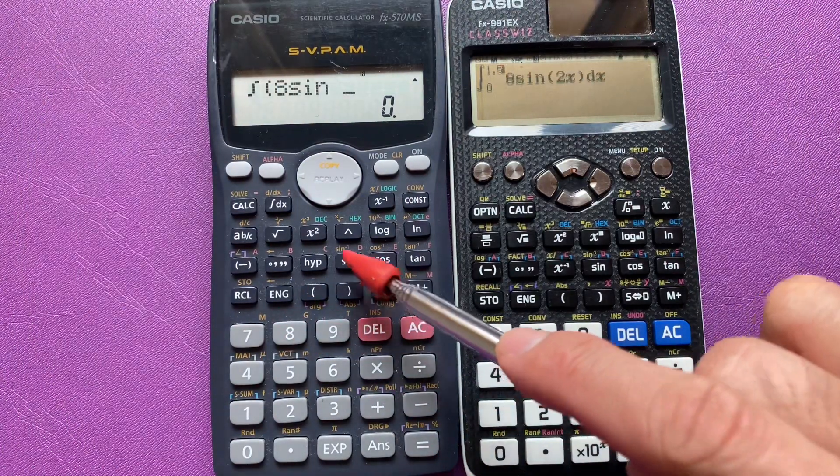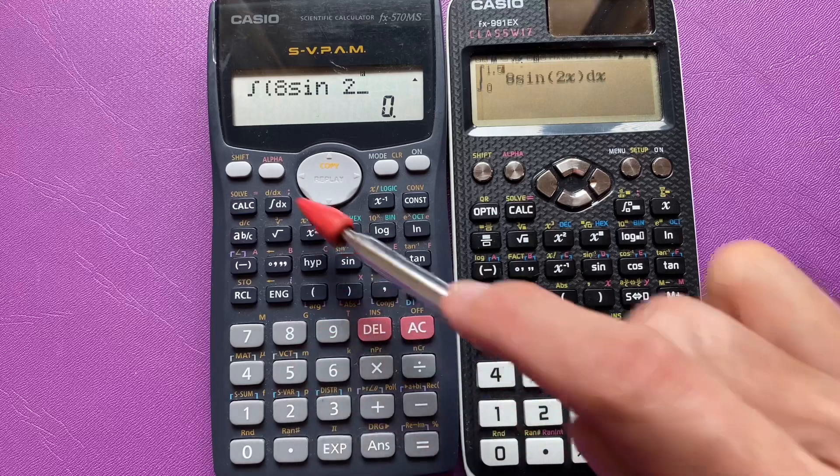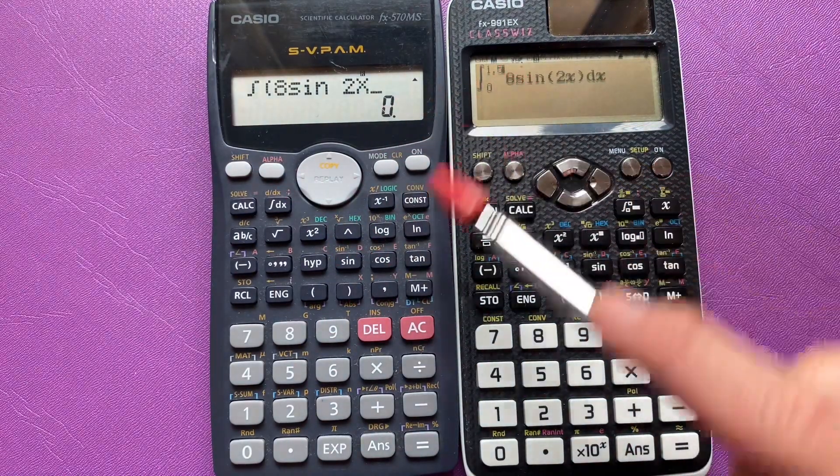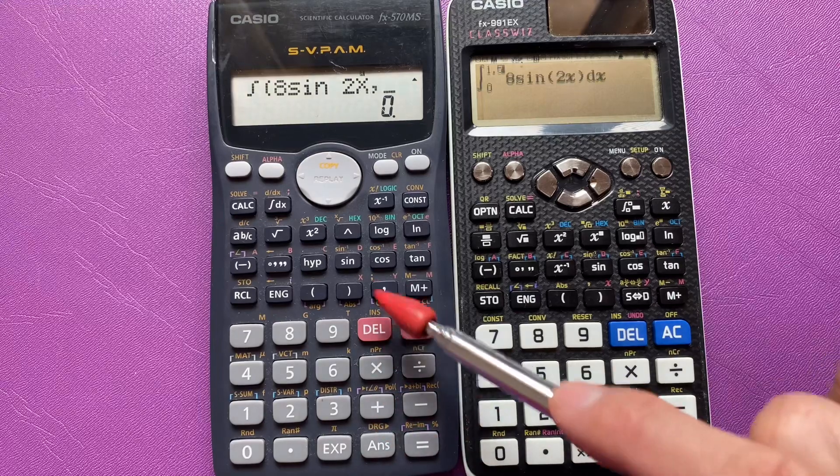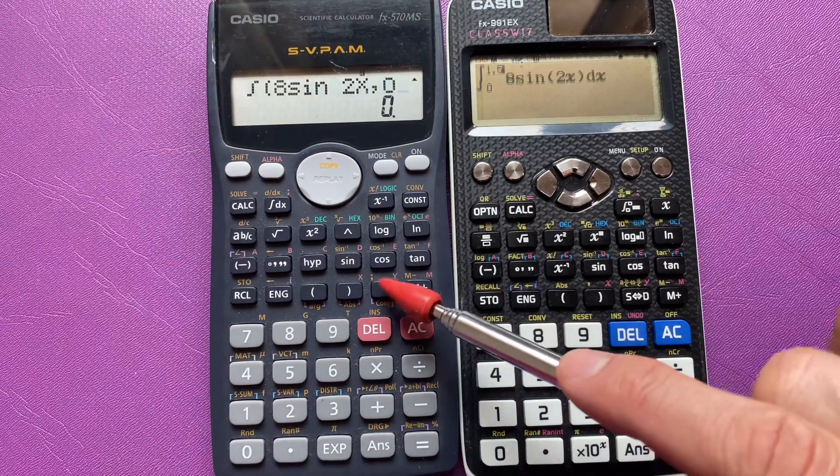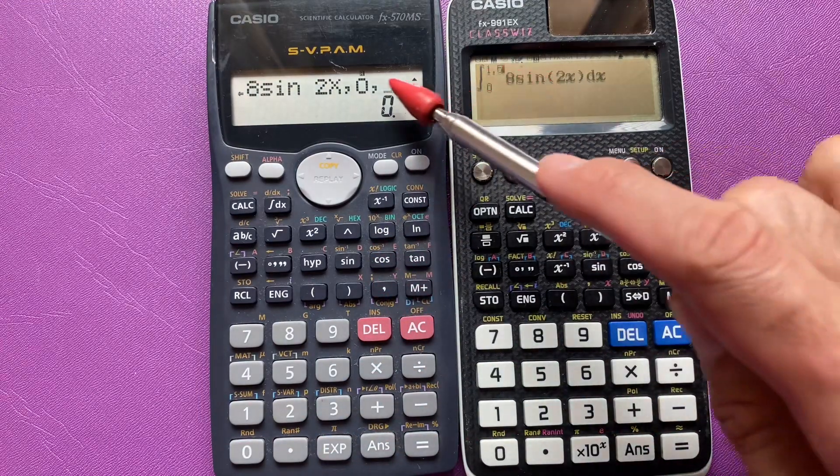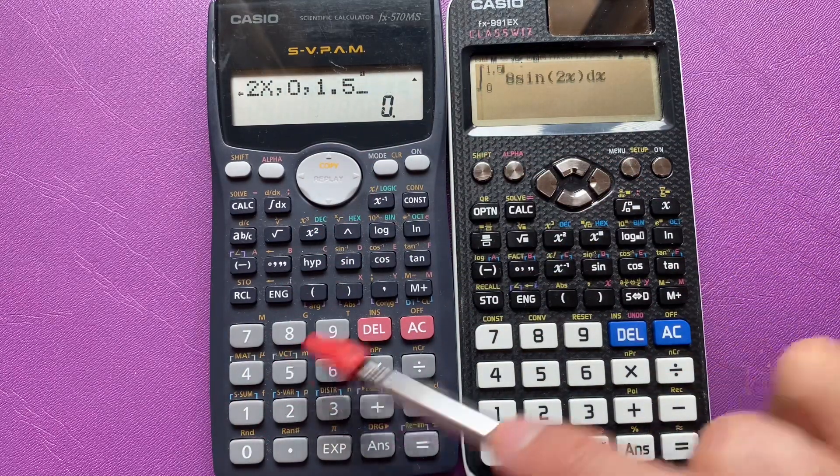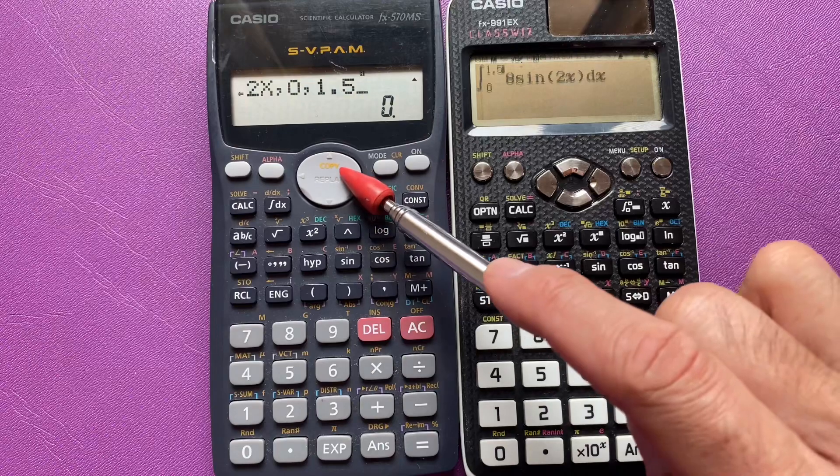Another obvious example is the processing power. The 991 EX or the 570 EX has relatively better processing time. Say if you want to integrate trigonometry, sin 2x from 0 to 1.5.